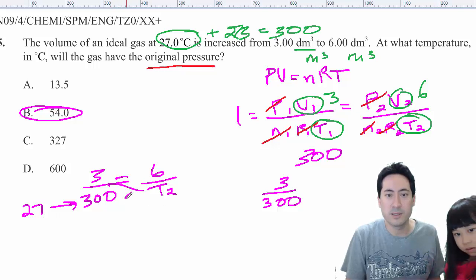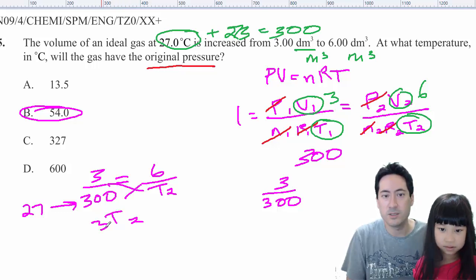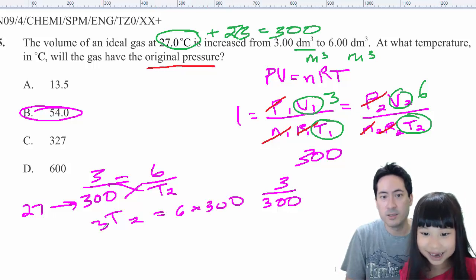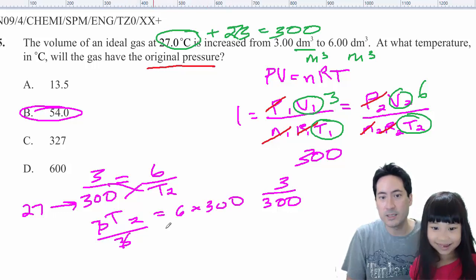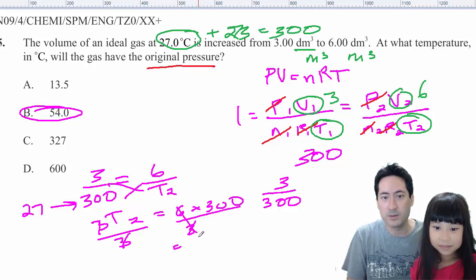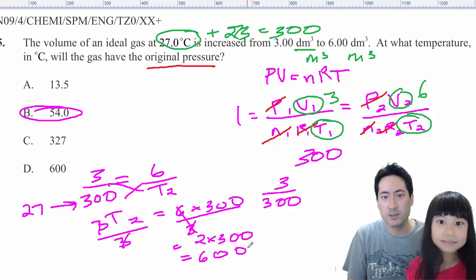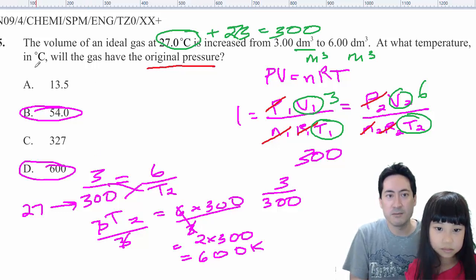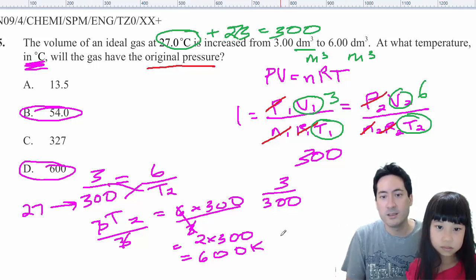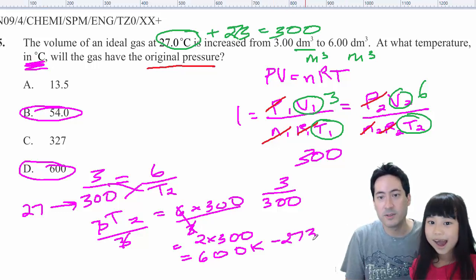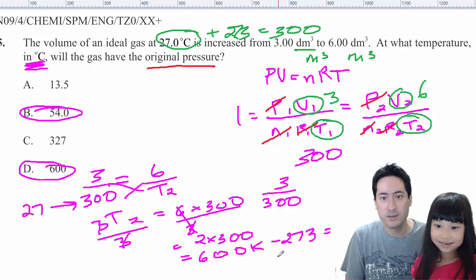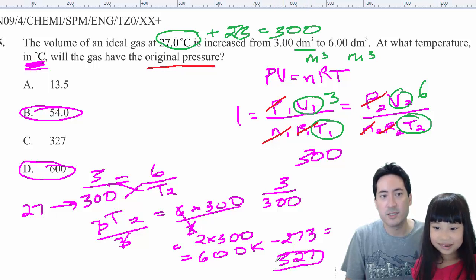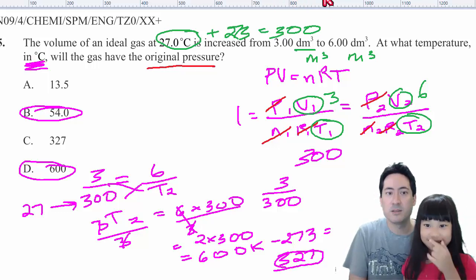So, let's cross multiply these things. So, T2, 3T2 equals 6 times 300. Put the 3, cancel it out. So, 6 on 3 will end up being 2 times 300. And the answer will be 600 Kelvin. Which is not that answer, because they want it in degrees Celsius. They're really nasty, Madeleine. So, you've got to minus 273. And that's 327. The answer is C. So, the answer must be C.